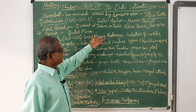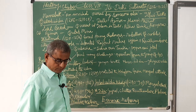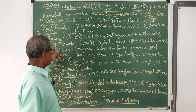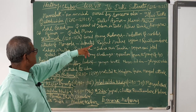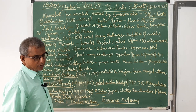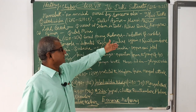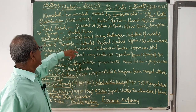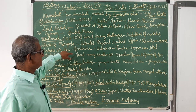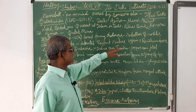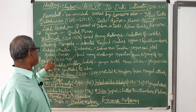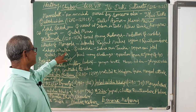Iltutmish faced many challenges: rebellion of the nobles within his territory and attacks of the Mongols. However, he suppressed the rebellion of the nobles, resisted the Mongol attacks, and defeated Rajput rulers like Ujjain and Ranthambhor. He also faced rebellion from Lahore and Multan.